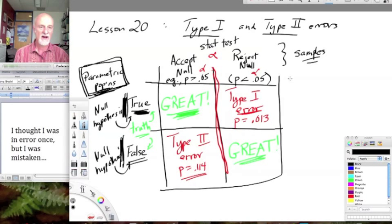I like to espouse a principle in my classes, which I call ERIN, just to give it a name. And it really is that errors are inevitable in statistics.